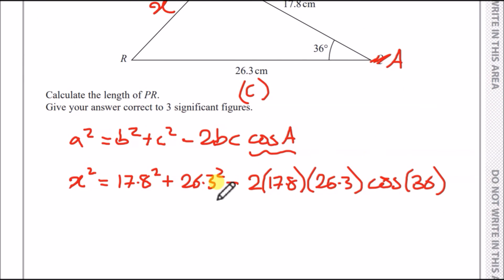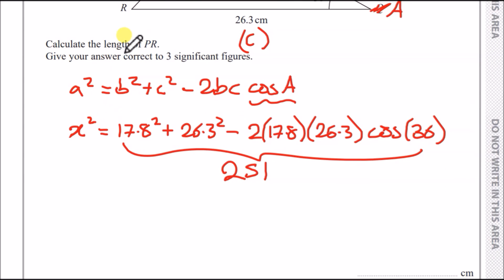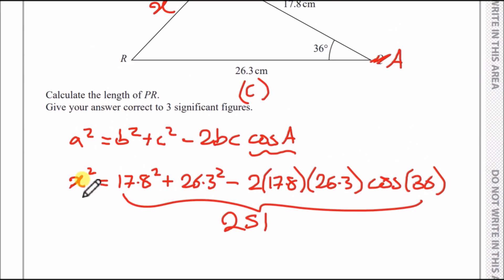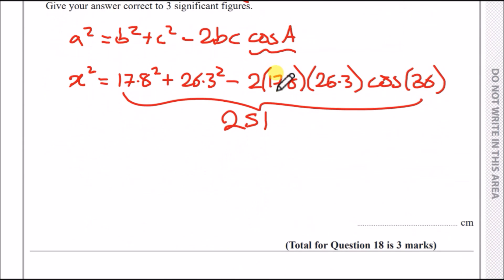Now, because we have everything we need, we just substitute in. So replacing little A with X, we have X squared. B is 17.8, so 17.8 squared plus C squared. I'm going to wrap these in brackets here. So B is going to be 17.8, C is going to be 26.3, and we've got cos of the angle, 36 degrees. Now, all you do is essentially just put this in your calculator. Approximately 251. And now, be careful, guys, because you want to find the length of PR. You don't want to find X squared. You want to find X. So that means you've got to square root your answer. So if you square root your result, you should get approximately 15.8 centimeters. And that's it, guys. It has to be three significant figures.